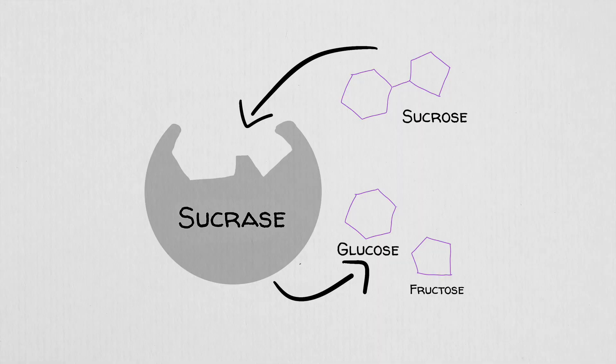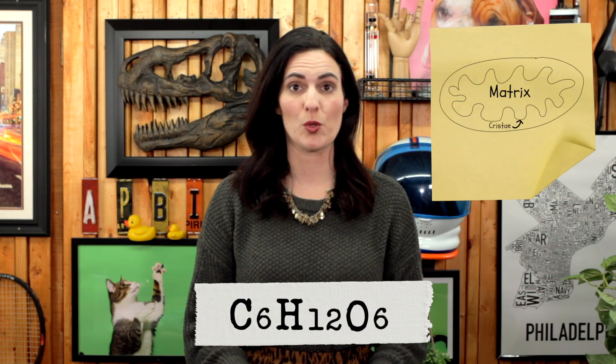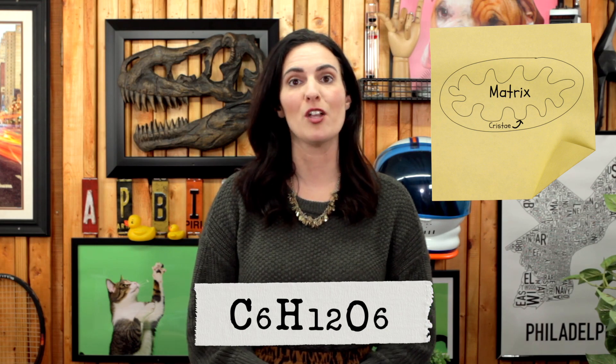Carbohydrates are formed from monosaccharide monomers, and only contain the elements carbon, hydrogen, and oxygen in a one to two to one ratio. These biological molecules can form long chains, some of which are branched or ring structures. Monosaccharides like glucose and fructose, as well as disaccharides like lactose and sucrose, are often used as fuel sources for the cell. Glucose in particular, C6H12O6, is the primary energy source for cellular respiration in mitochondria.